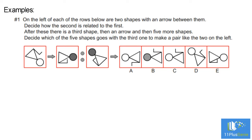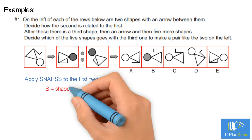Example 1. On the left of each of the rows below are two shapes with an arrow between them. Decide how the second is related to the first. After these there is a third shape, then an arrow, and then five more shapes. Decide which of the five shapes goes with the third one to make a pair like the two on the left. Apply SNAPS to the first two figures.